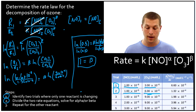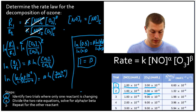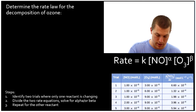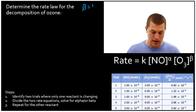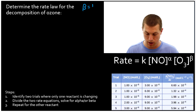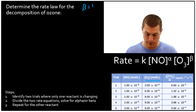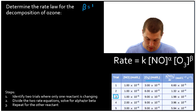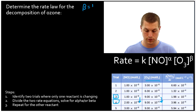Now that we have beta equals 1, we go back and find another set of trials to solve for alpha — that's step three. This time we look for trials where ozone is held constant. Looking at trials three and four, ozone stays the same while nitrogen monoxide doubles, so that's the set of rate equations we'll use.